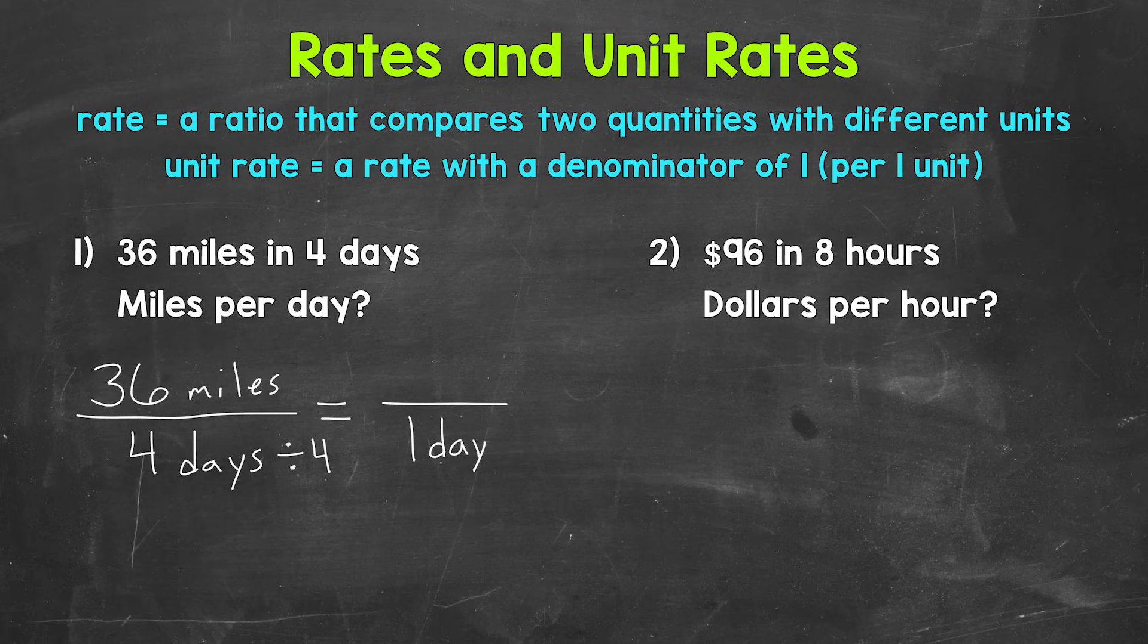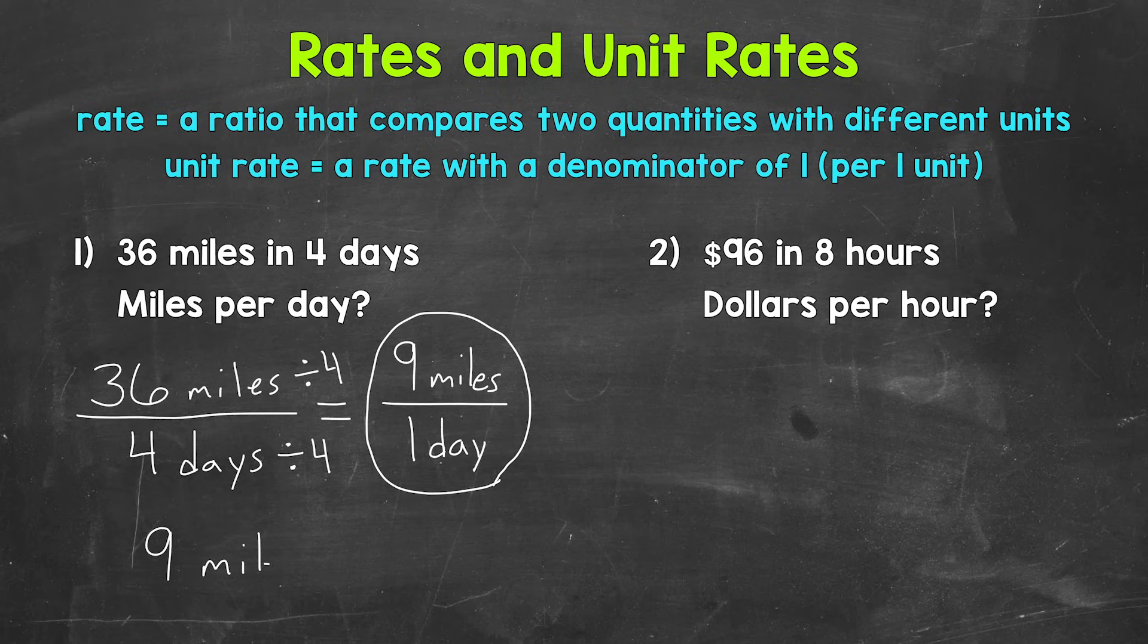Whatever we do to the bottom, we must do to the top. So divide 36 by 4 as well. 36 divided by 4 is 9, and this is miles. And that's our unit rate: 9 miles per 1 day, or 9 miles per day. Now, we can also write this as 9 miles per day.